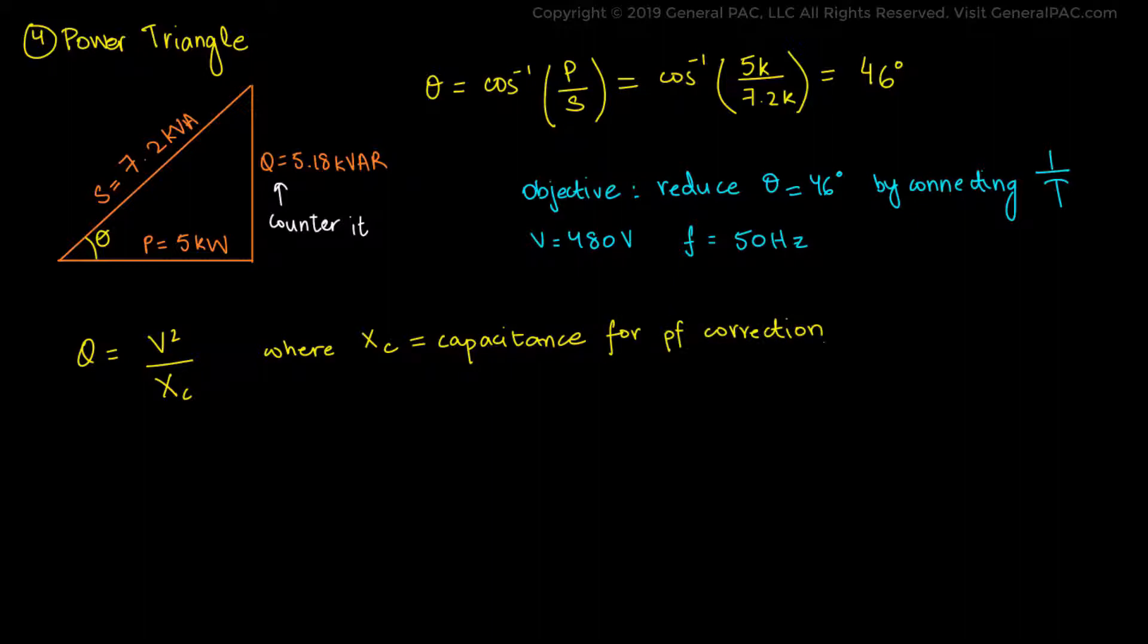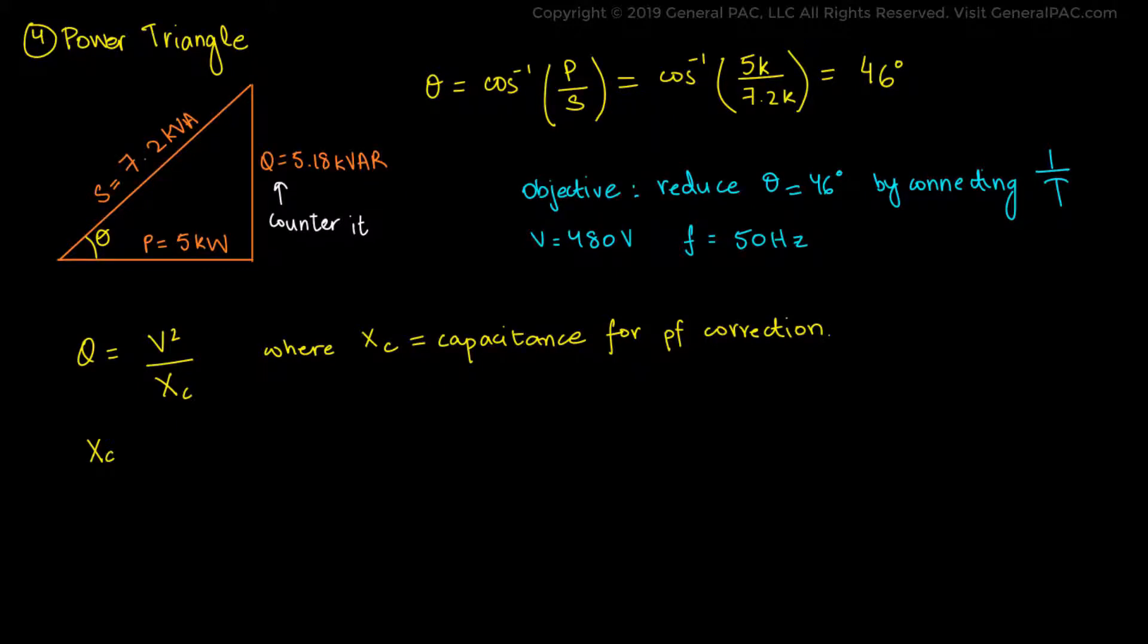Rearranging the equation, Xc equals V squared over reactive power, which equals 480 squared divided by 5.18 kVAR. Plugging in the values and solving, we get 44.478 ohms.